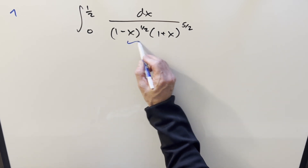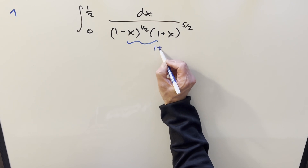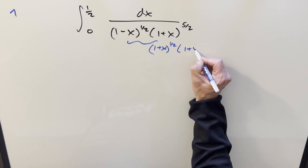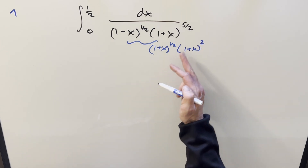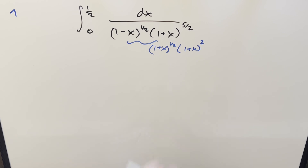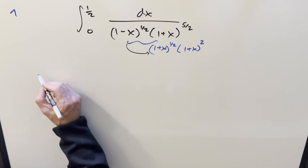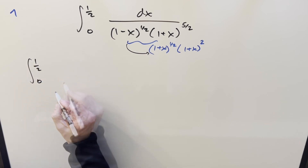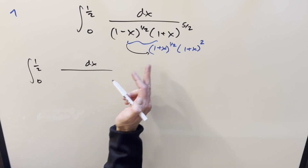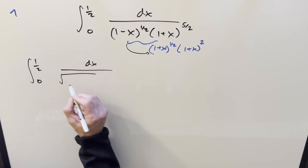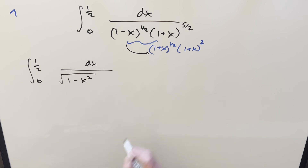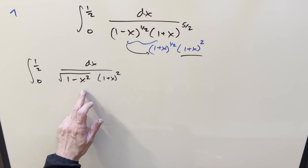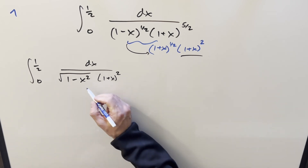For 1 plus x, I can peel a (1 plus x)^(1/2) out of it, and then the other part is going to be (1 plus x)^2, because together these are still 5/2 multiplied together. But when you multiply this times this, what's going to happen is this becomes 1 minus x squared. So we get the same integral from 0 to 1/2, and what we end up with is 1 over square root of (1 minus x squared) times (1 plus x) squared, dx.